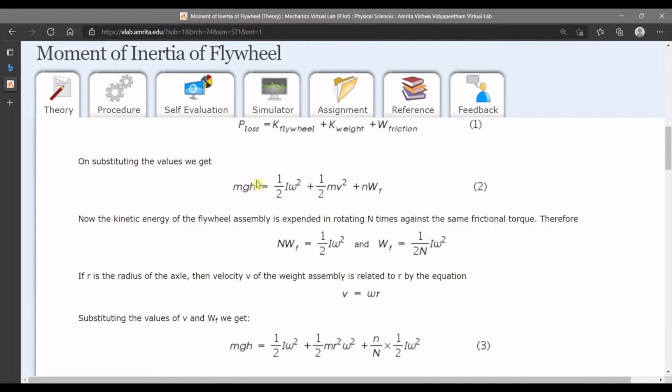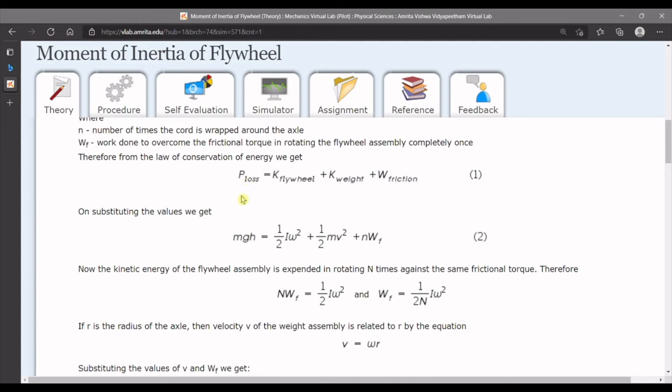Here n is the number of windings of the string on the axle. So finally, the equation is: initial potential energy of weight hanger, which is mgh, converts into the rotational energy of flywheel half I omega square, plus kinetic energy of weight hanger half mv square, plus total work done by friction.